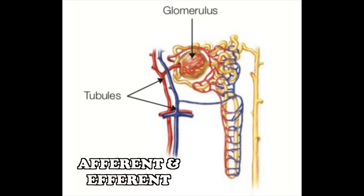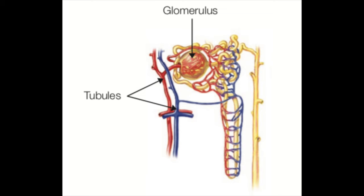The afferent arteriole has a larger lumen than the efferent arteriole. Therefore, blood flows into the glomerulus faster than it flows out, which creates a pooling of blood in the Bowman's capsule. Hydrostatic pressure on the blood will force fluid to cross the glomerular membrane and enter the tubules — this is ultrafiltration. As filtrate flows through the tubular network, special cells will respond to the need for reabsorption and secretion. The end product of this filtrate is urine.